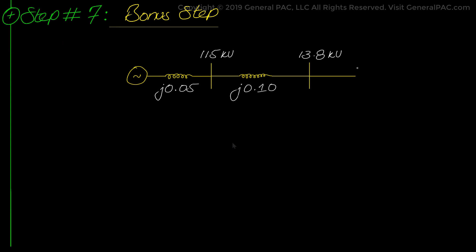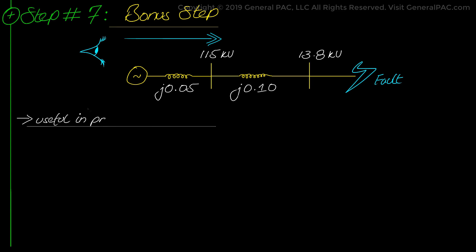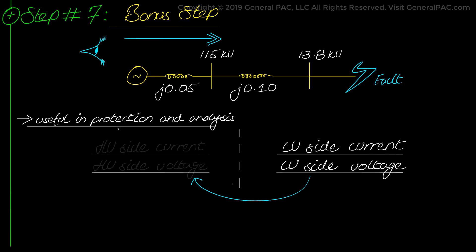Up until now we have been seeing calculations and methodologies on faults on the low voltage side of the 13.8 kV transformer in our example. But let's suppose that the fault is still on the 13.8 kV side of the bus, but we need to know what the same fault current and voltage values are, however this time seen through the high voltage side of the transformer or the 115 kV side of the bus. This is useful for many instances in power system protection and analysis, so we will reflect the fault current and voltage quantities from the low voltage side towards the high voltage side.